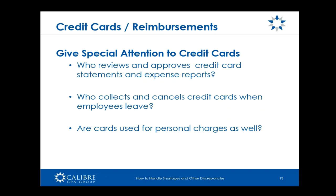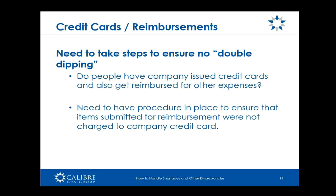Are the cards used for personal charges? You want to limit that as much as possible. From time to time someone may pull out the wrong credit card — if it happens sporadically, that's normal. But if it happens systemically throughout the organization or with specific individuals, that needs to be addressed. You also want to make sure there's no double dipping — where someone puts something on their credit card and also attaches the receipt to their expense report for cash reimbursement. This can be easy if a charge hits the credit card and a few months later they submit the receipt for cash reimbursement. You need a procedure to ensure this isn't happening, especially in organizations where people travel frequently.